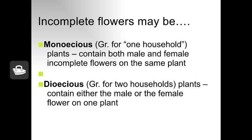In order to set fruit, male and female dioecious plants must be planted close enough together for pollination to occur. In some cases, like the holly, the fruit is desirable. In others, like the ginkgo, the fruit is not desirable because the female ginkgo flowers smell pretty badly.